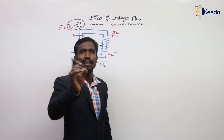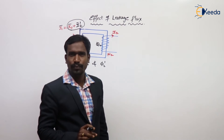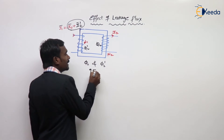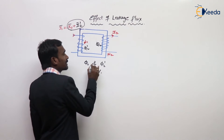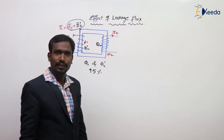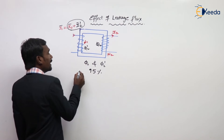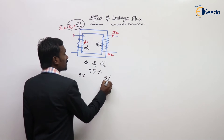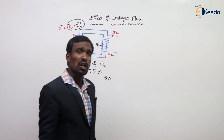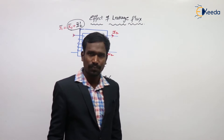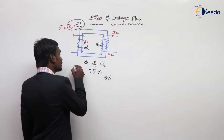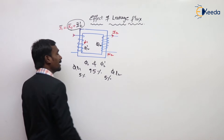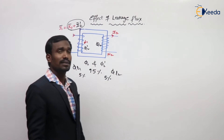But practically this is not possible. Practically, out of 100%, 95% of flux is cancelled by each other. But the remaining 5% of flux is not cancelled, and that is called Leakage Flux.